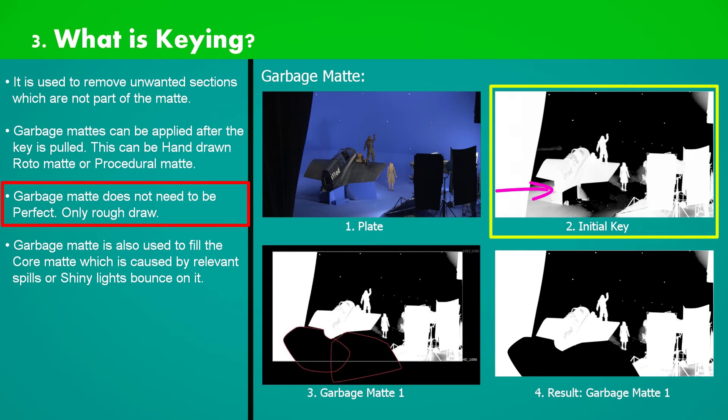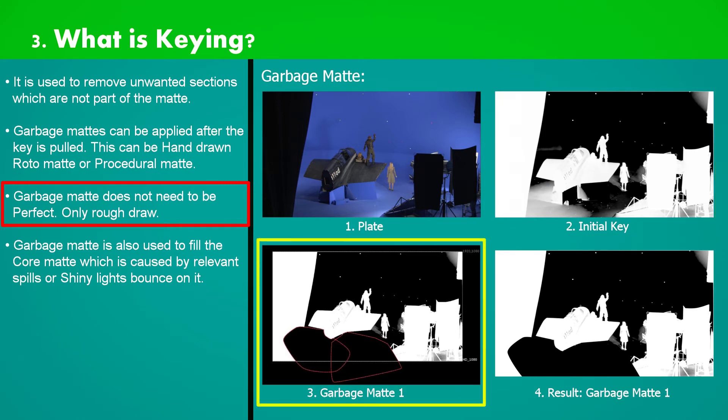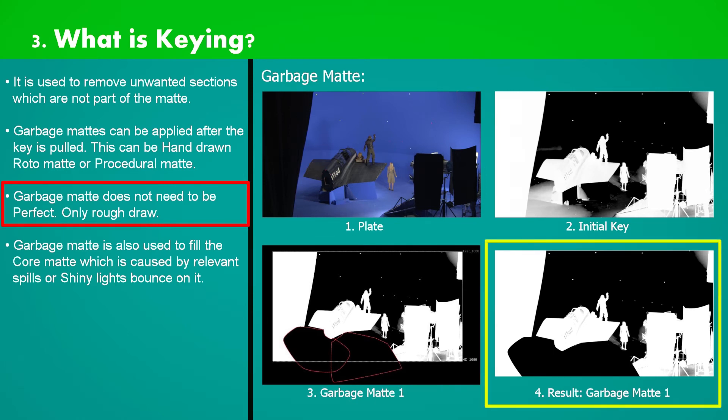So the job goes to garbage matte. On image 3 we can see that we have applied roto shape to draw garbage matte. And on image 4 the result after we have applied garbage matte.